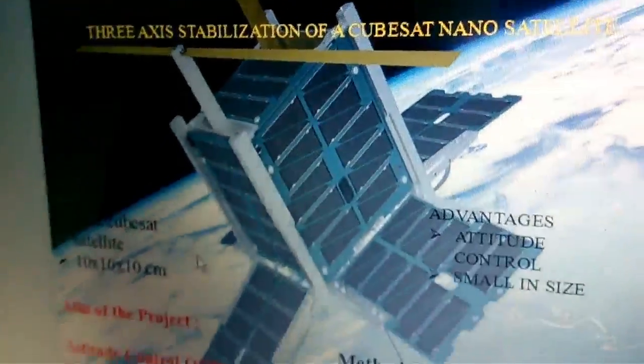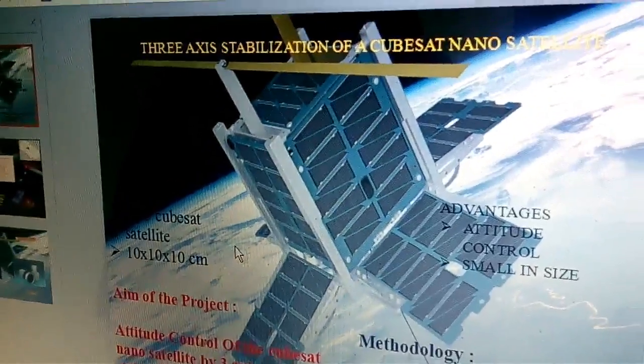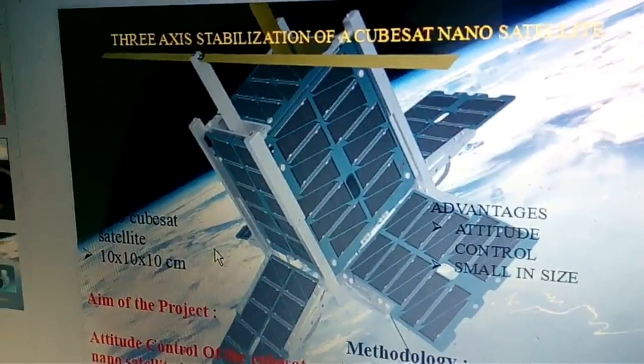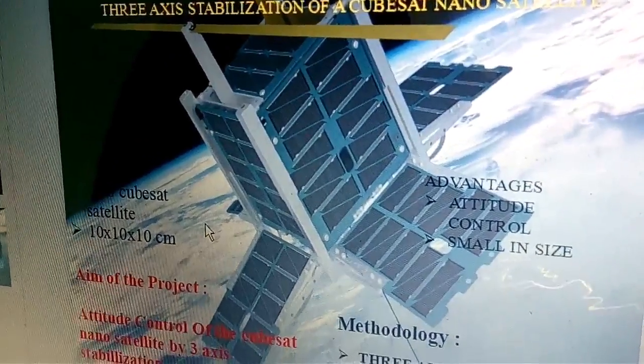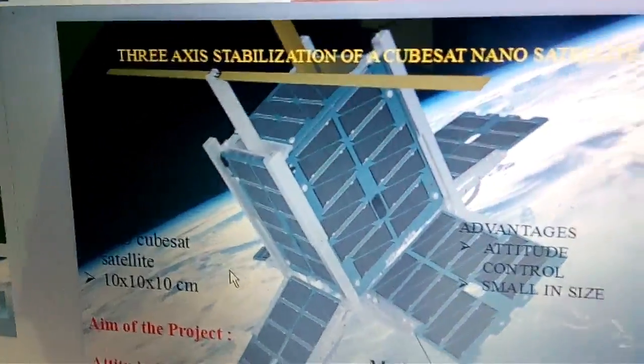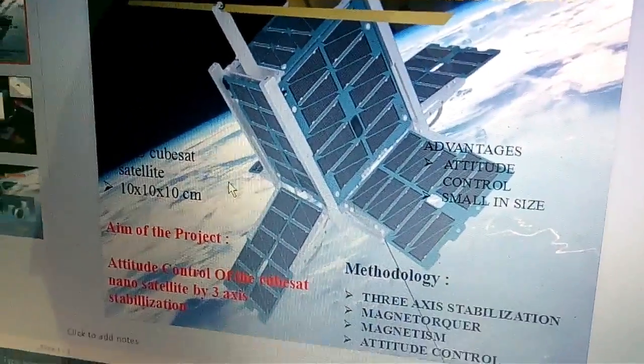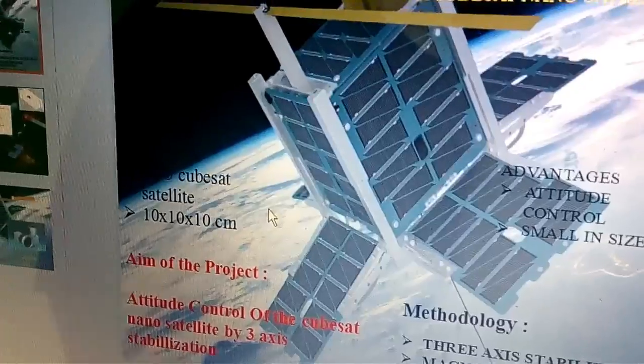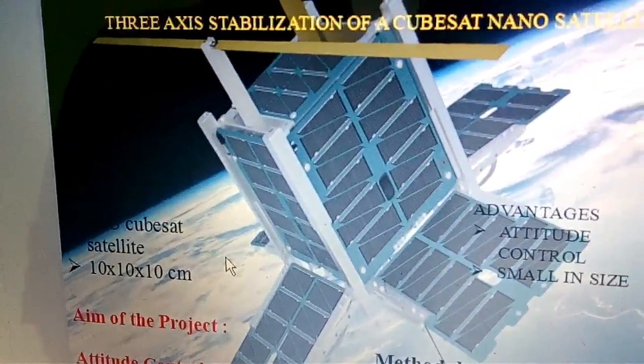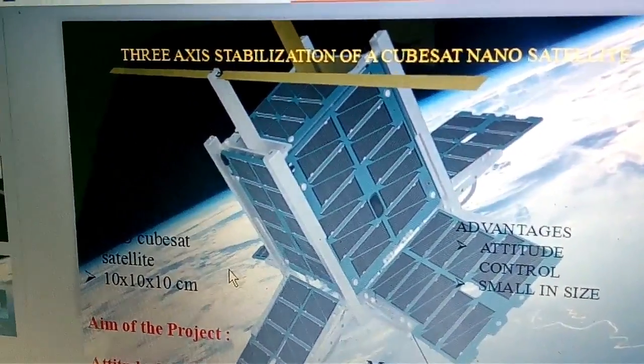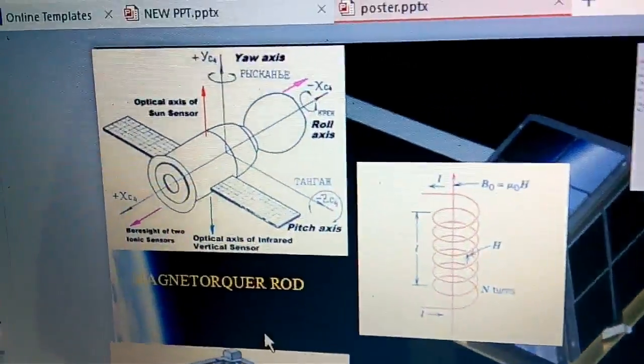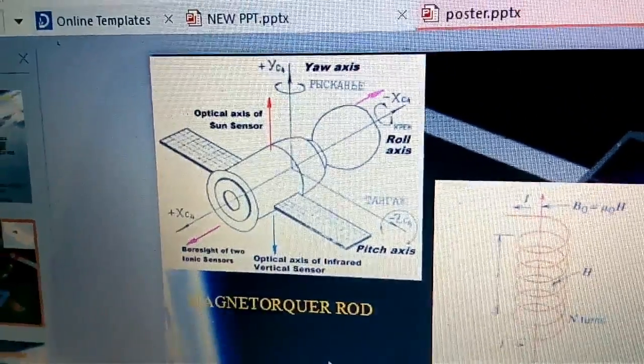Under that, we are going to determine the actual stabilization of a nano-satellite by using magnetorquers, three-axis stabilization. We know a satellite must have three axes in three-dimensional space. It should be controlled along these three axes.